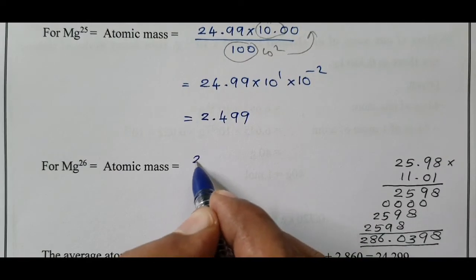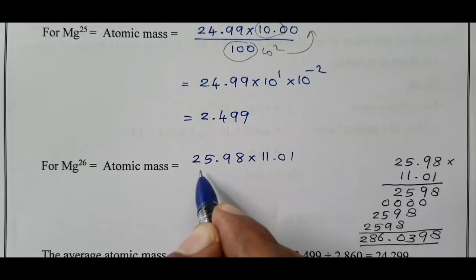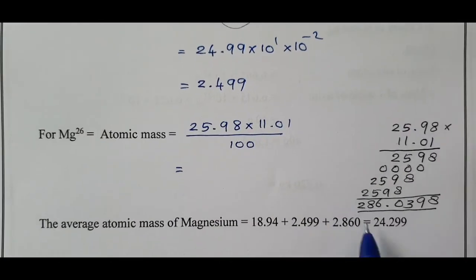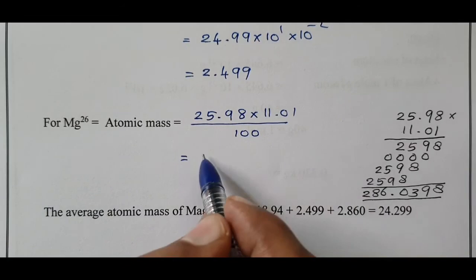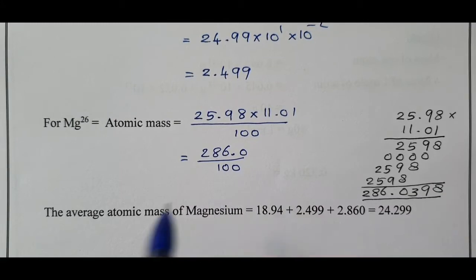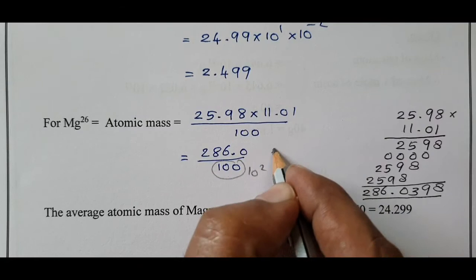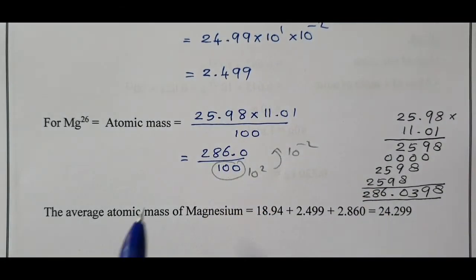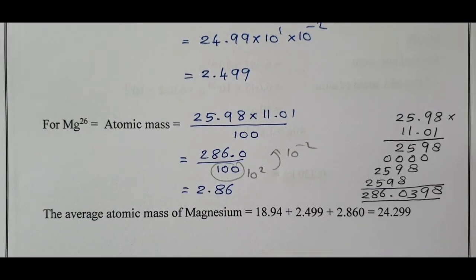For Magnesium-26, the isotopic atomic mass is 25.98 and abundance is 11.01, divided by 100. The multiplication gives 286.0, and 286.0 divided by 100 — bringing 10 power 2 to the numerator gives 10 power minus 2 — so 286 into 10 power minus 2 gives the answer 2.86.